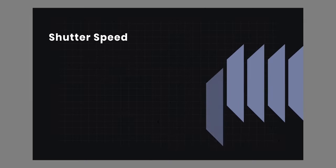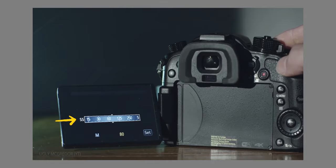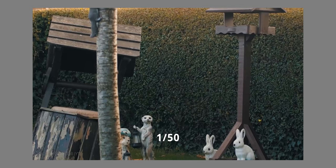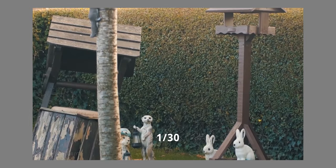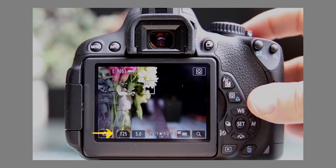The two direct effects of shutter speed are exposure and motion blur. First, let's talk about exposure. The shutter controls how long the frame is exposed to light. The slower the shutter, the longer the frame is exposed to light, resulting in a brighter image. The faster the shutter, the less light reaches the frame, resulting in a darker image.